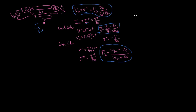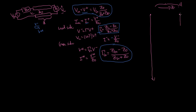One way to express this is what we call a bounce diagram. This bounce diagram represents the space-time continuum of a one-dimensional space. We have distance — the space quantity — going this way, where this side is the generator and this side is the load, so this distance is D. Time goes downward. We call the time for a one-way trip across the transmission line capital T, which equals D divided by the propagation velocity.